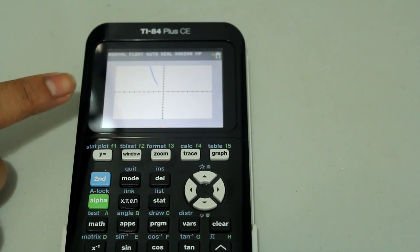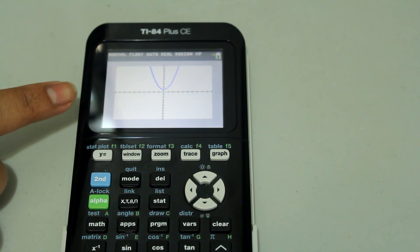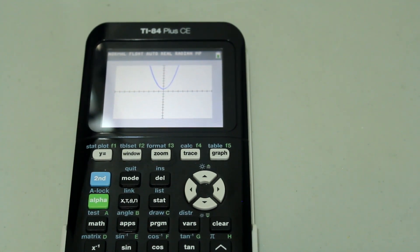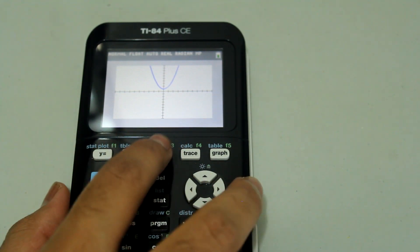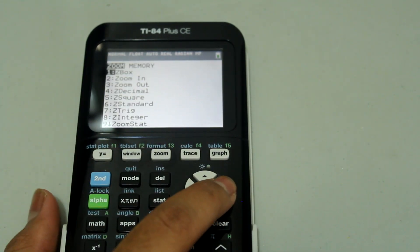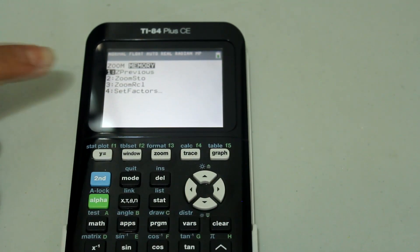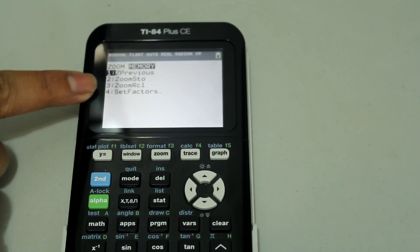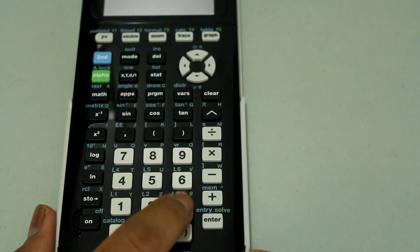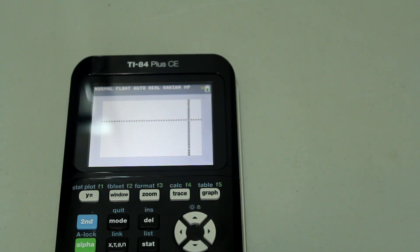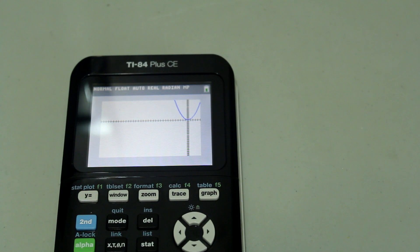And now you see I got the standard window right back. And now if I wanted to recall the saved window, go back to zoom, right arrow to memory. Then select the option that says zoom RCL which is zoom recall. And just hit number 3. And you see that I get the saved window right back.